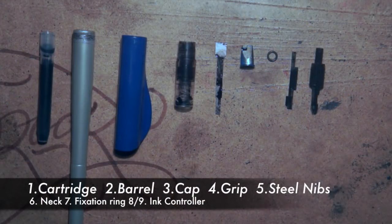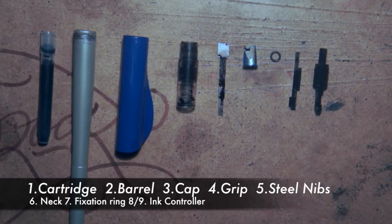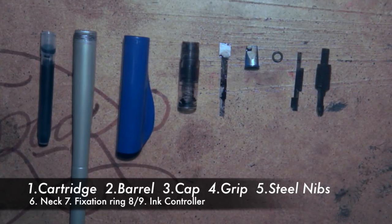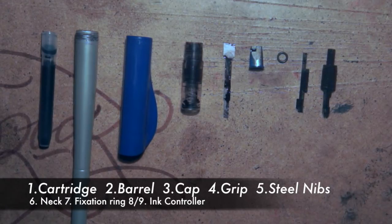Its construction consists of a cap, barrel, ink cartridge neck, ink controller, fixation ring, neck, grip, and double steel nib in between which the ink comes out.